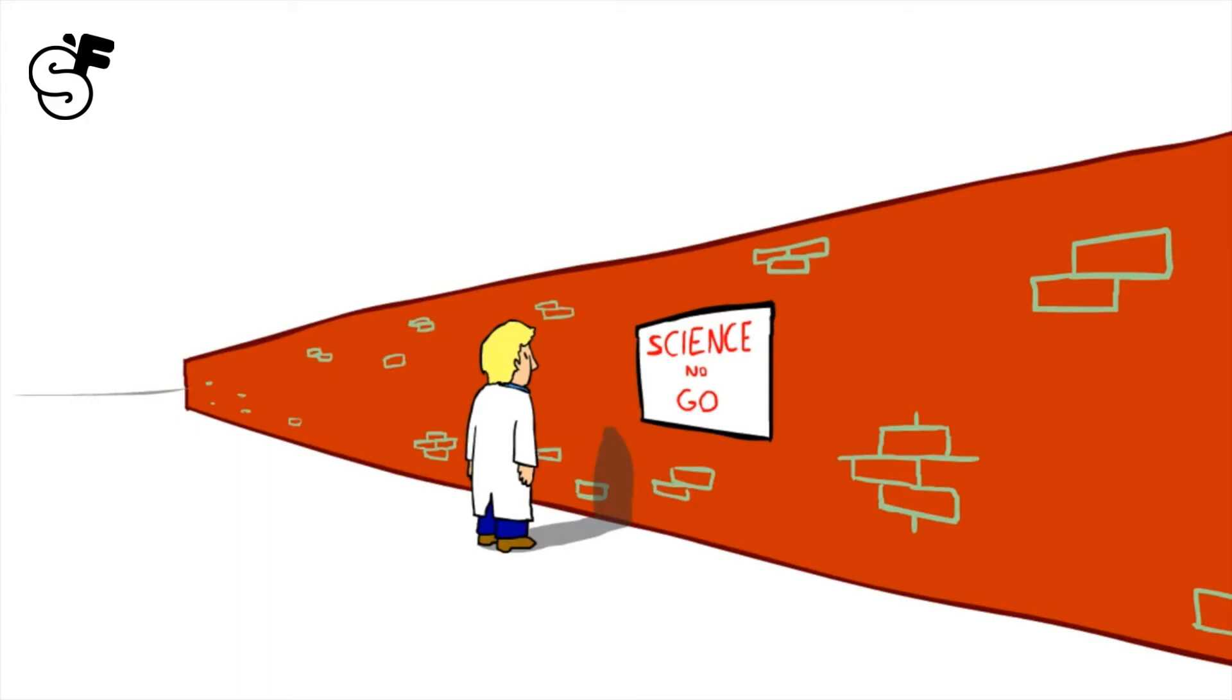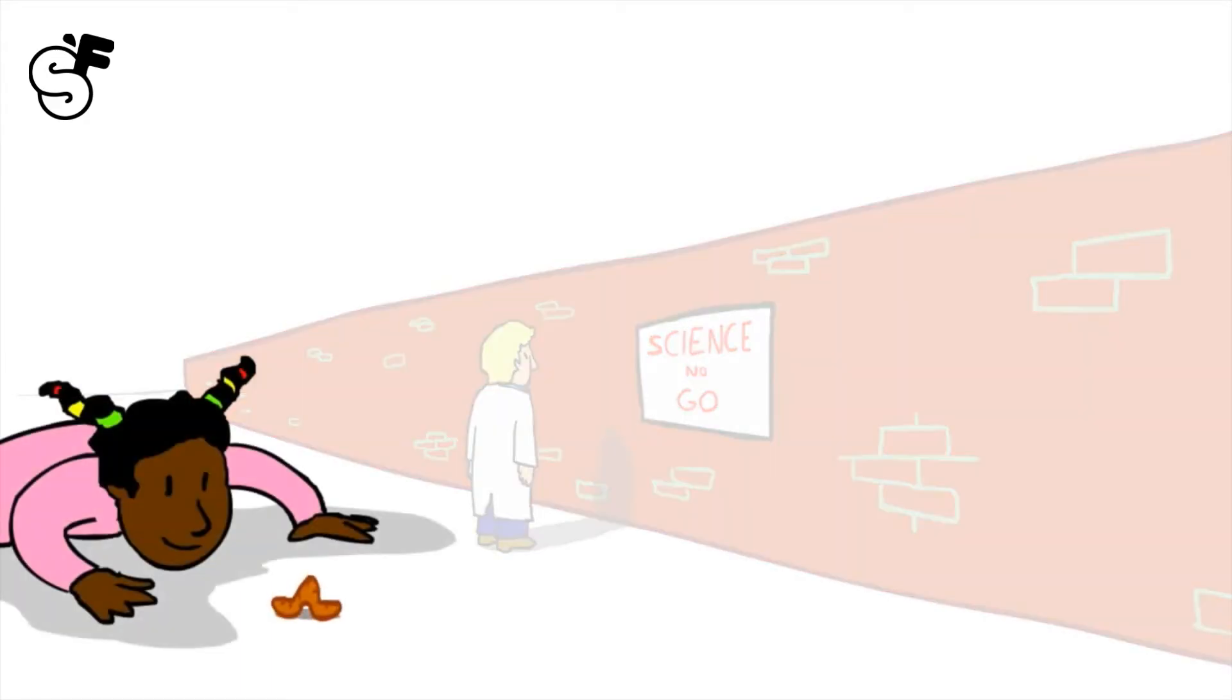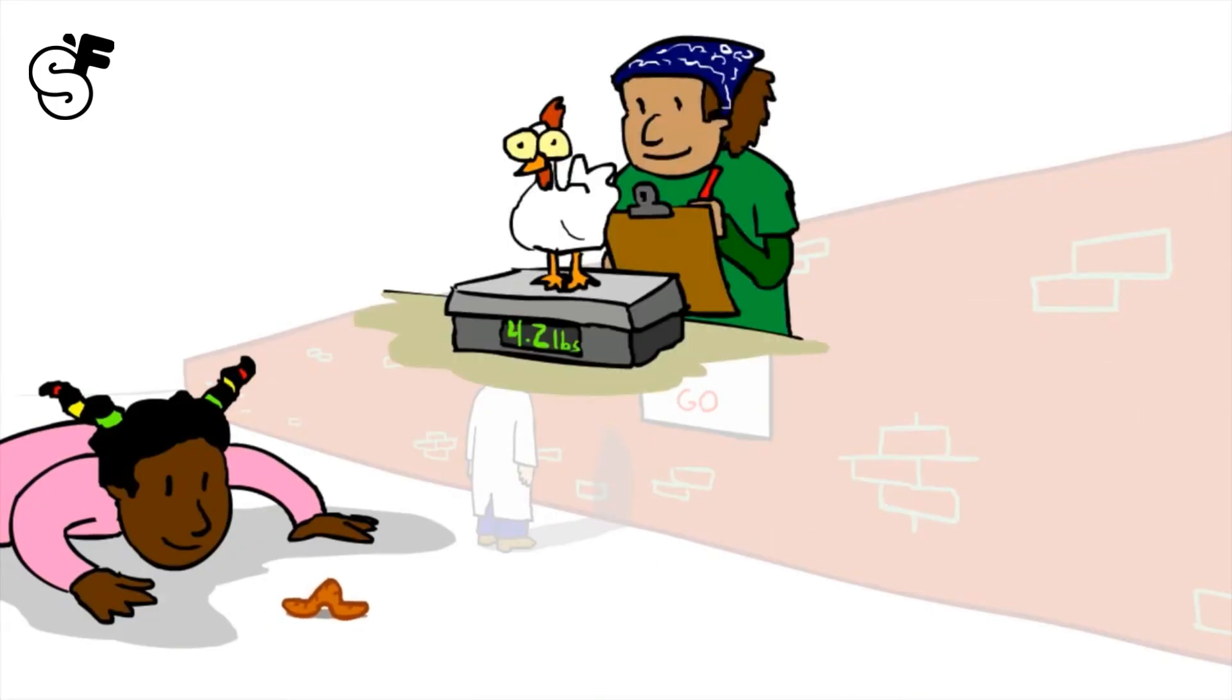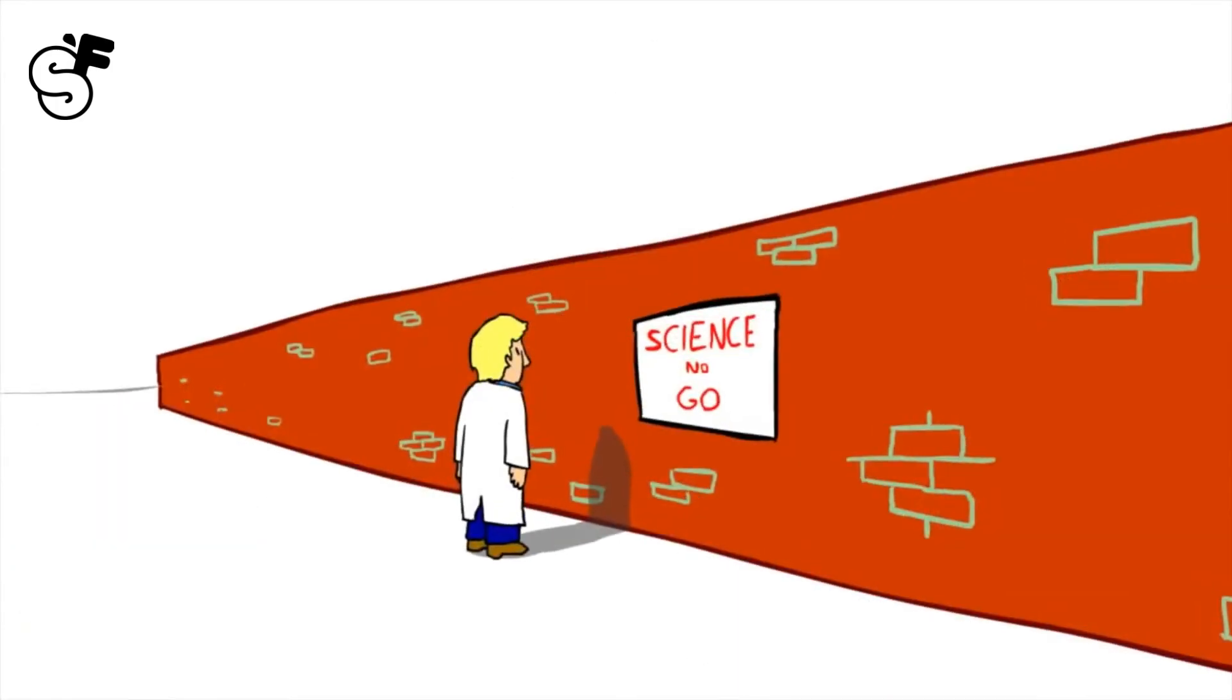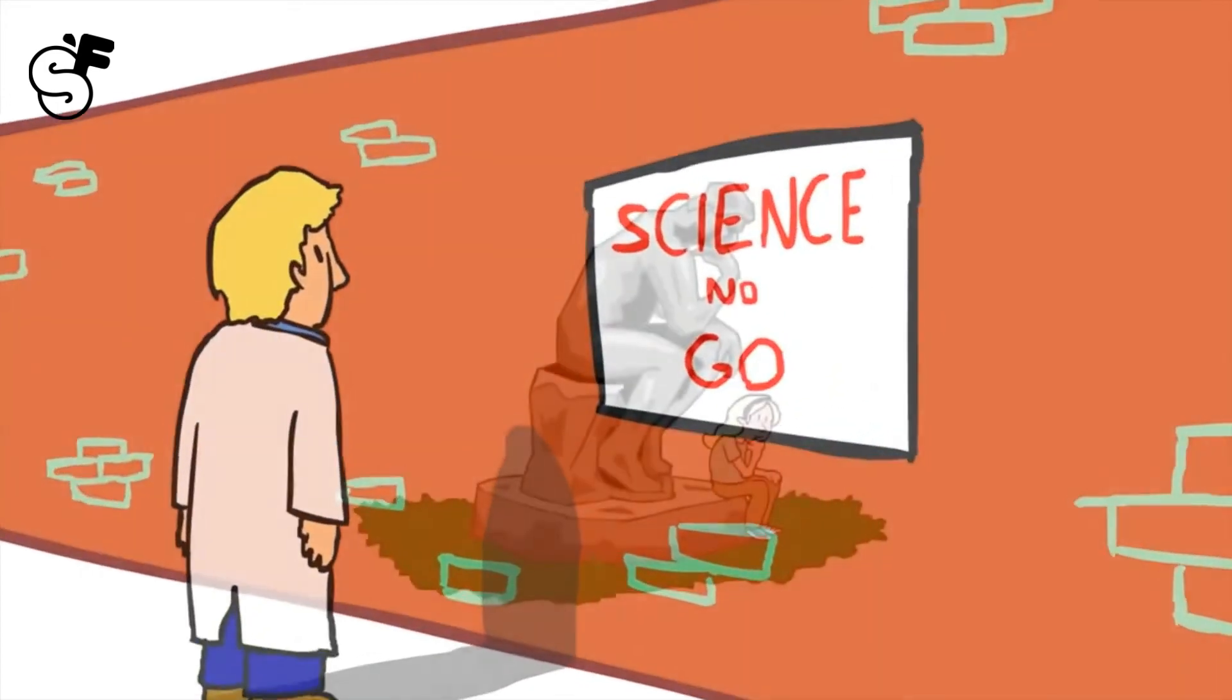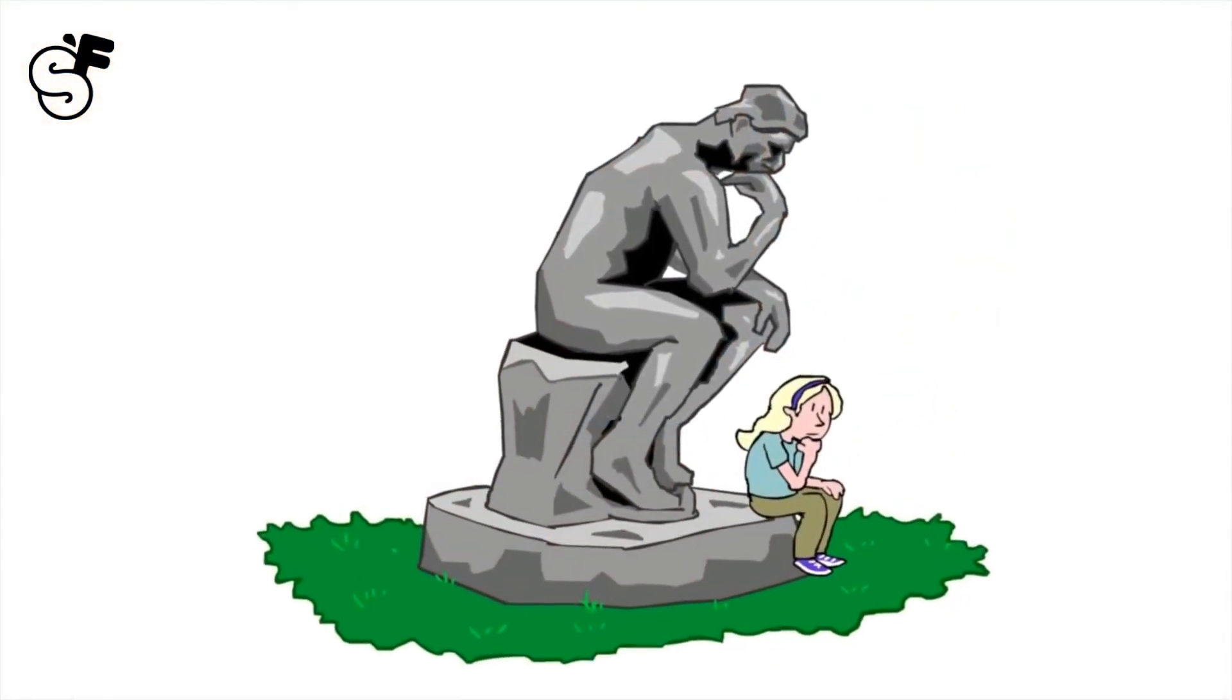Granted, science has its limits. It can't shed light on everything - only things that can be observed, measured, and tested in the natural world. Some things are beyond the realm of science, things that can't be proved or disproved, like the meaning of life or the existence of anything supernatural.